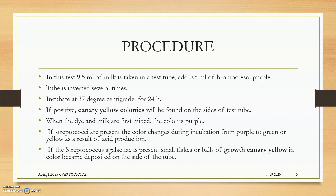If positive, on the sides of the test tube there will be canary yellow colonies. The canary yellow colonies indicate that Streptococcus agalactiae is present. Small flakes or balls of canary yellow growth become deposited on the sides of the test tubes.